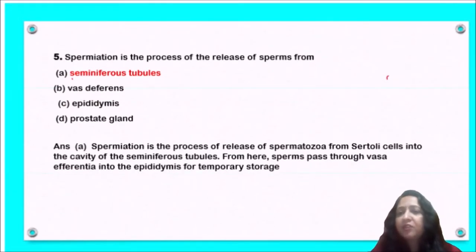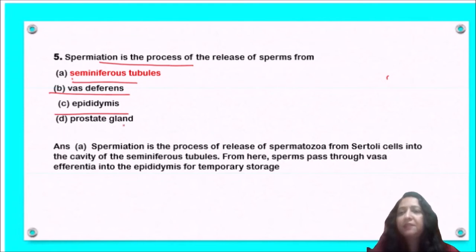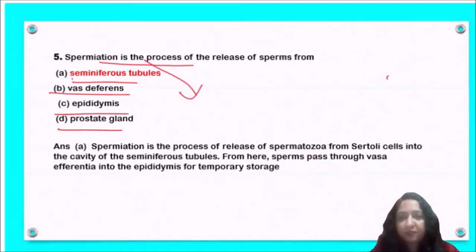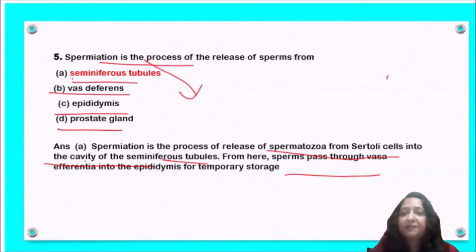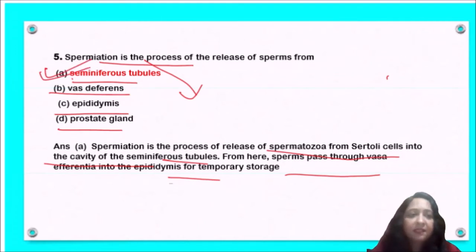Next question: spermiation is the process of release of sperm from seminiferous tubules, vas deferens, epididymis, or prostate gland? Spermiation is the process of release of sperm from the Sertoli cells into the cavity of seminiferous tubules. From here the sperm passes through the vas deferens and enters the epididymis. So option A, seminiferous tubules, is the correct answer.